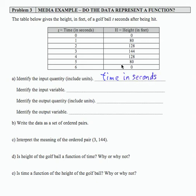The input variable is the letter T. The output quantity is what the output represents, which is the height of the golf ball, and the units are feet. The output variable is the capital letter H.